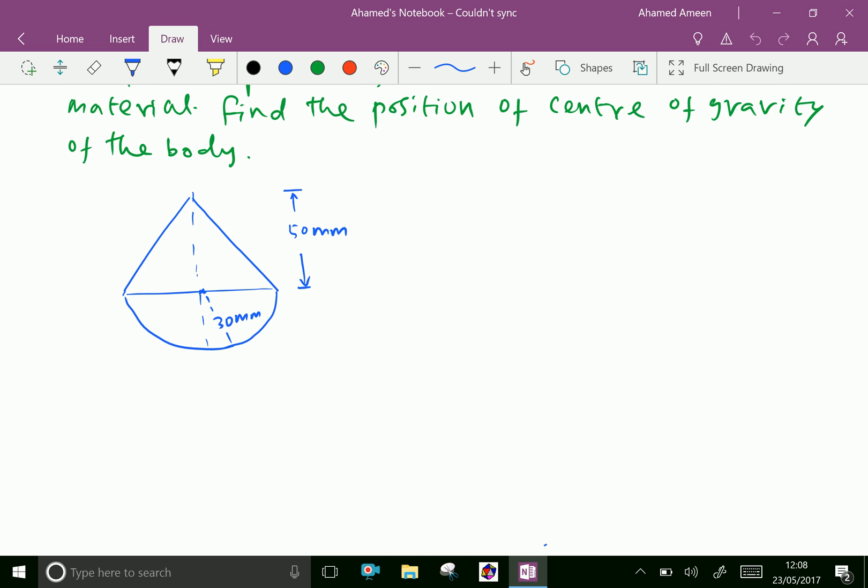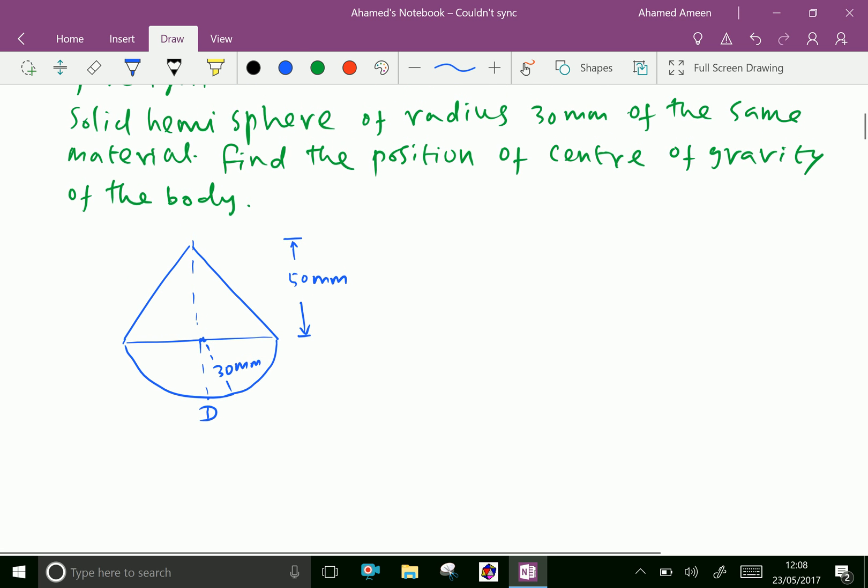Let us take the baseline at the base of the hemisphere. Take this letter D here, A, B, C and D. Here the height of the cone is 50 mm and radius of the cone as well as hemisphere is 30 mm. Both are in same material.